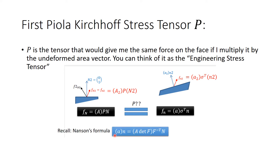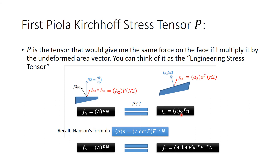We will find an expression for P. We first recall Nanson's formula, which relates the area vectors in the reference and deformed configurations. We use this formula to replace a and n in the expression for the force vector. When we substitute, we get an expression as a function of capital A and capital N. Equating the two force vectors gives a relationship between P and the Cauchy stress tensor sigma.